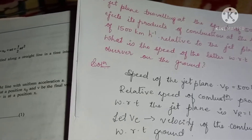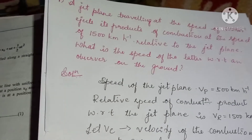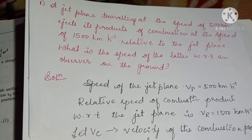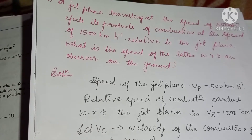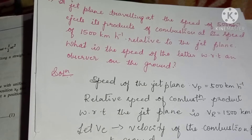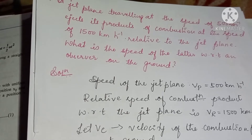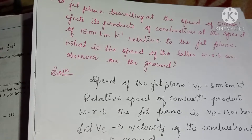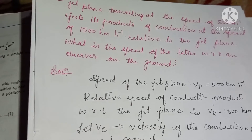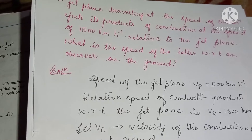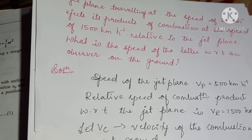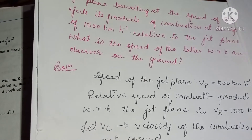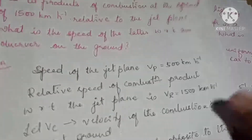Let us start with the first problem: a jet plane traveling at a speed of 500 km per hour ejects its products of combustion at a speed of 1500 km per hour relative to the jet plane. What is the speed of the combustion gases with respect to an observer on the ground?